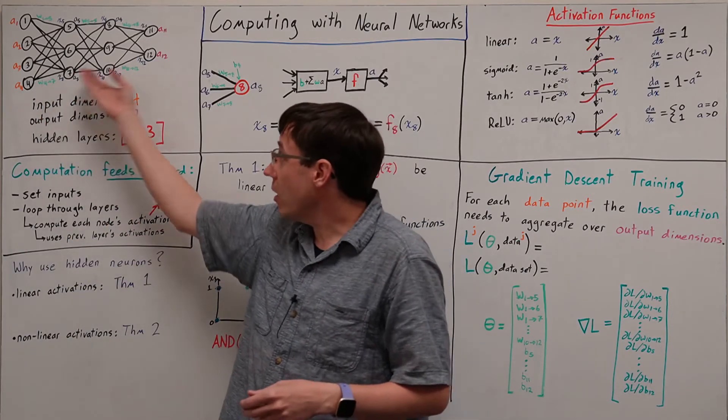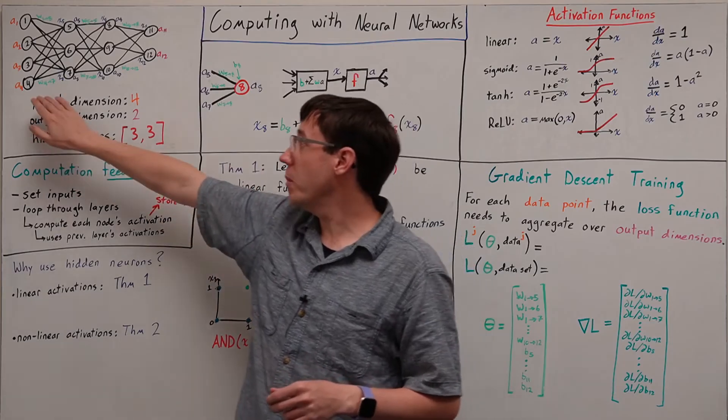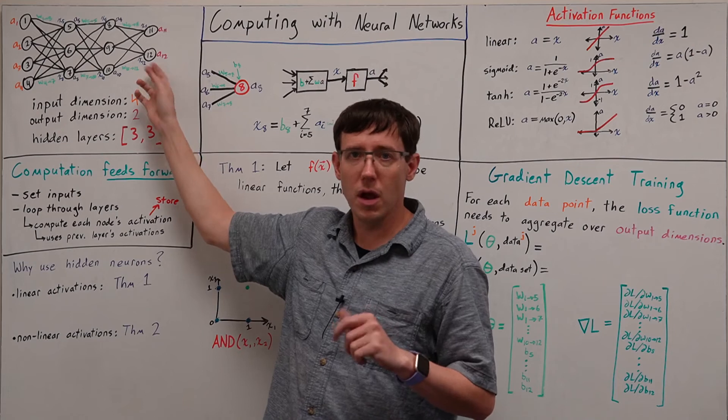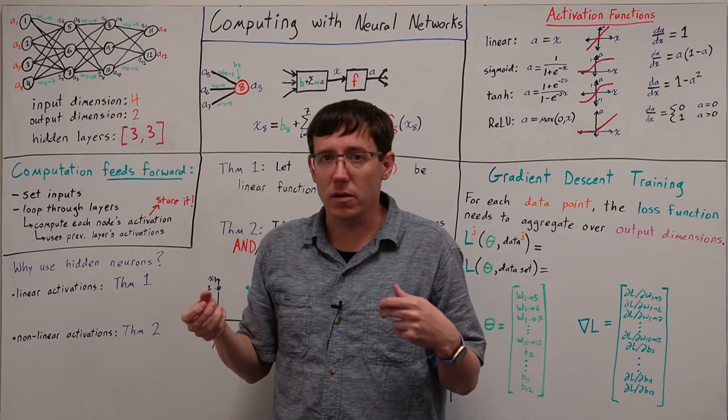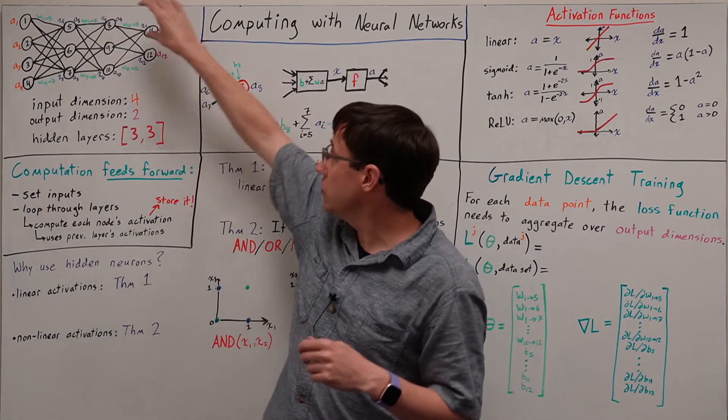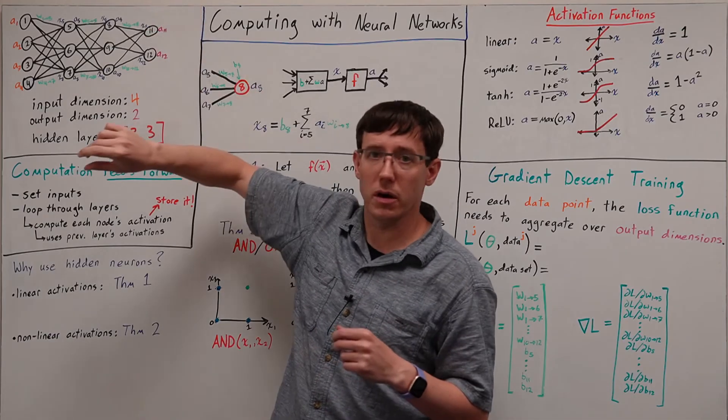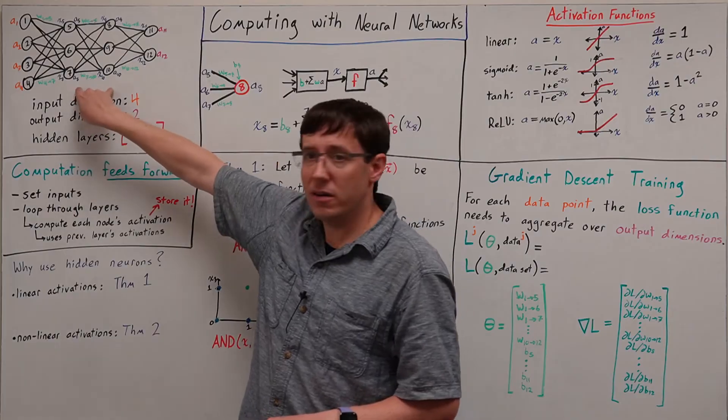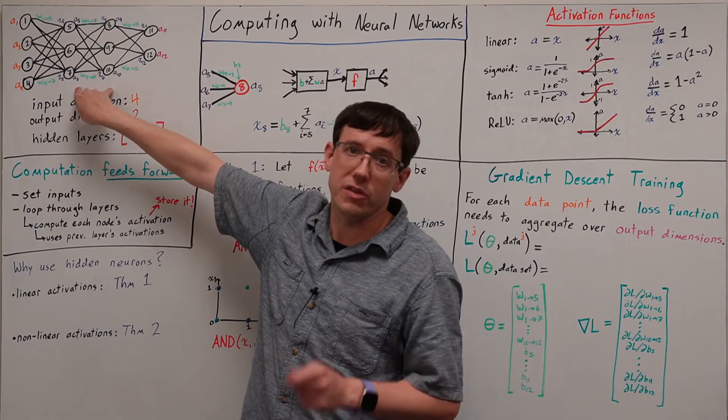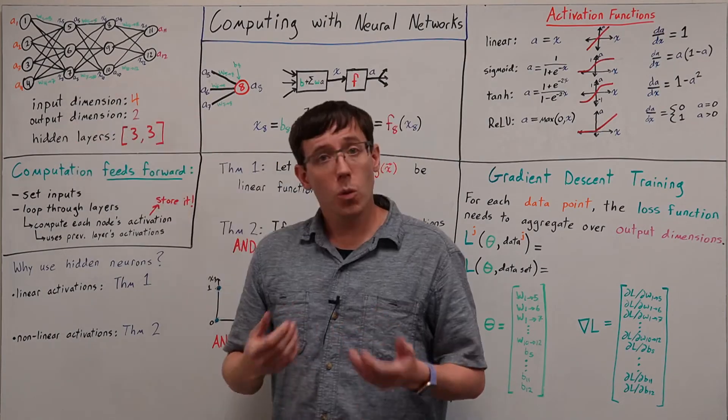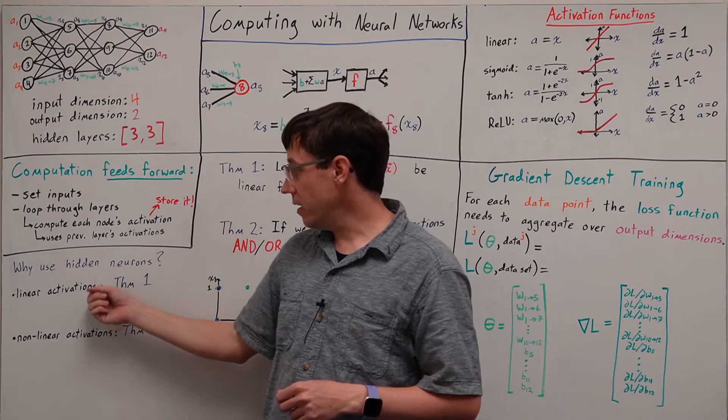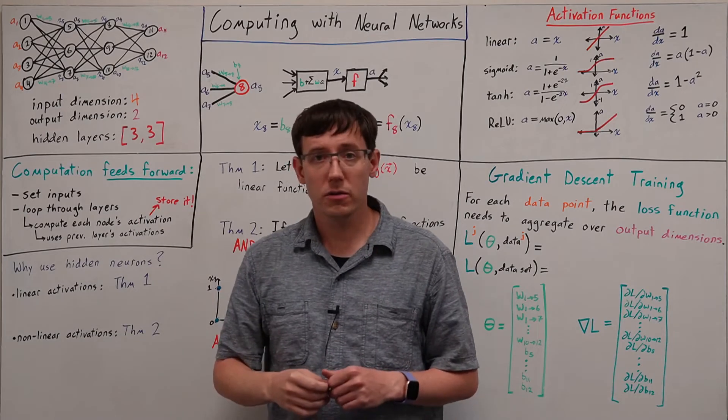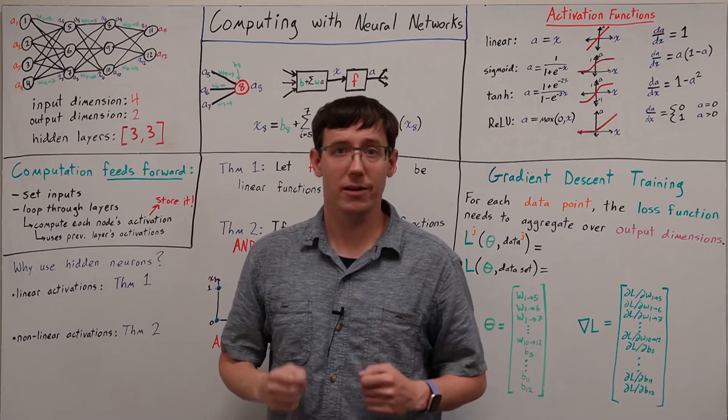So with a network like this one, we can map our four-dimensional inputs to two-dimensional outputs. But why is that any better than just using two single neuron models to produce the two outputs? In other words, what's the benefit of messing around with these hidden layers? Well, it turns out that if we use linear activations for all of our neurons, there's actually no benefit at all.